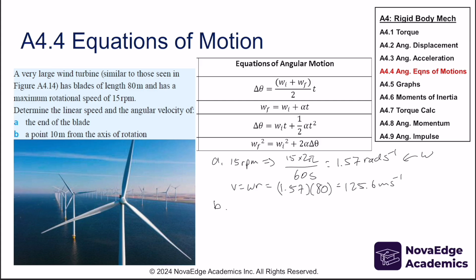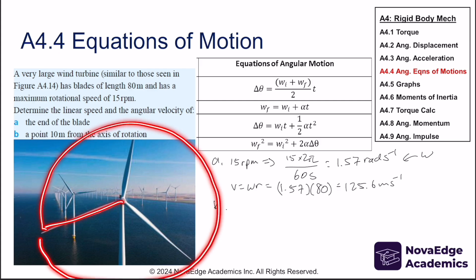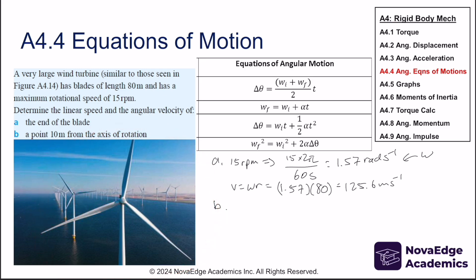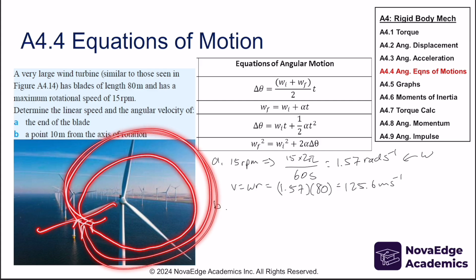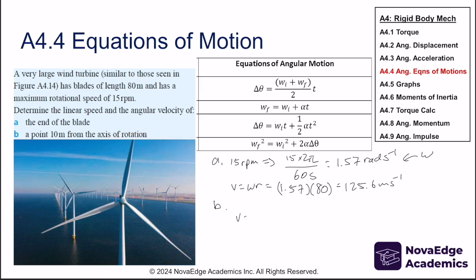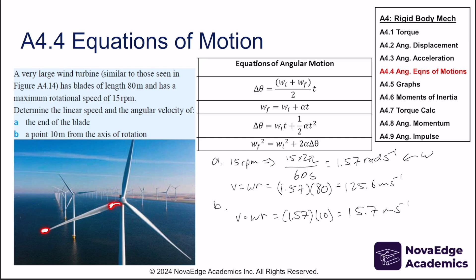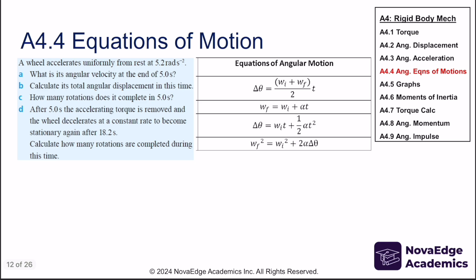For a point 10 meters from the axis of rotation, the rotations per minute are the same, because both points rotate together. However, the angular velocity is still 1.57 rad/s, and using v = ωr gives v = 1.57×10 = 15.7 m/s. This shows how linear velocity differs at different radii even though angular velocity is the same.